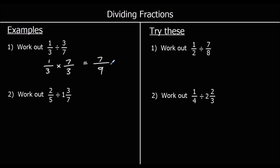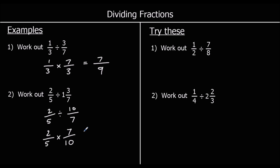Question two: two-fifths divided by one and three-sevenths. First, change one and three-sevenths into a top-heavy fraction: a whole one is seven-sevenths, plus three is ten-sevenths. Then change to a multiplication by flipping the fraction — dividing by ten-sevenths is the same as multiplying by seven-tenths. Times the top: two times seven is fourteen. Times the bottom: five times ten is fifty. Simplifying by halving top and bottom gives seven over twenty-five.